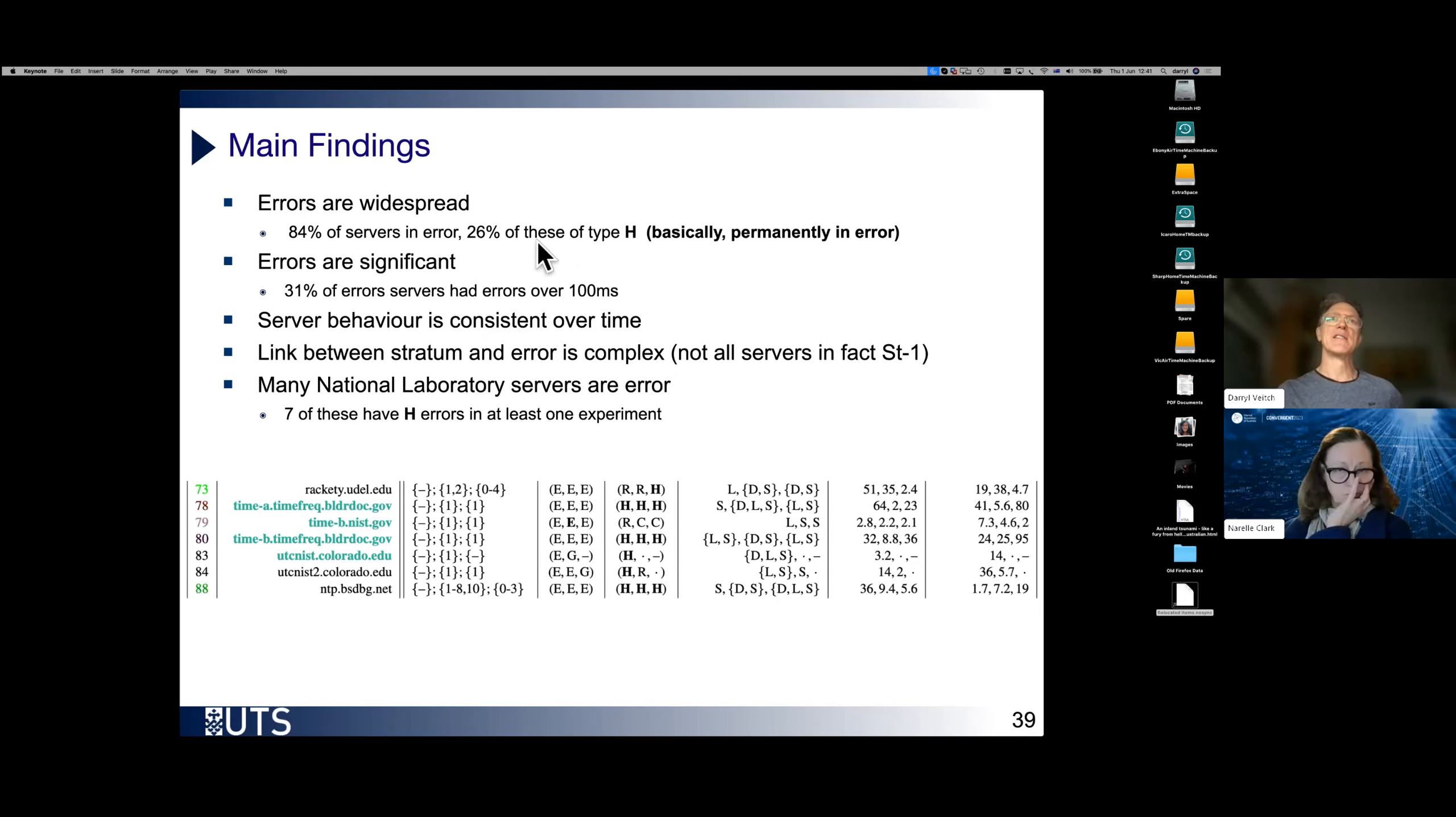26% of the errors, of those in error, were of type H, which basically means permanently in error, like I showed you earlier. There is a significant, over 31% of errors, of servers which had errors, had errors over 100 milliseconds. Now remember these are supposed to be the stratum ones. These are the servers anchoring the system.